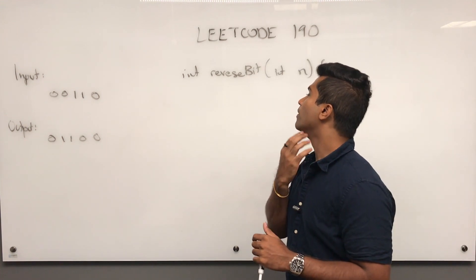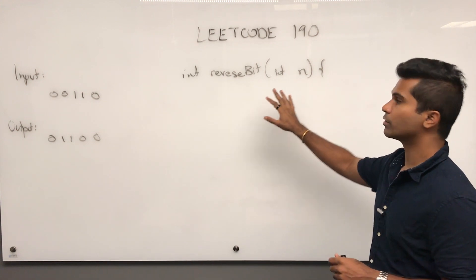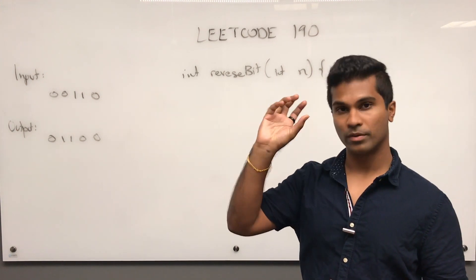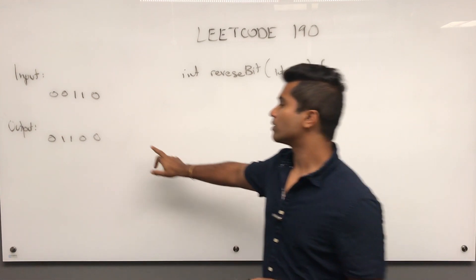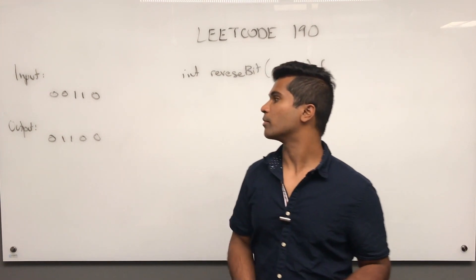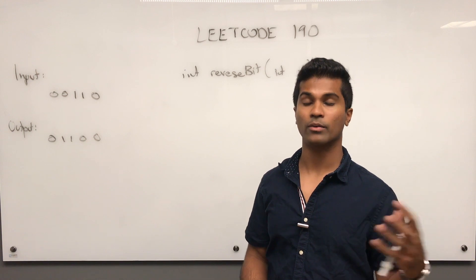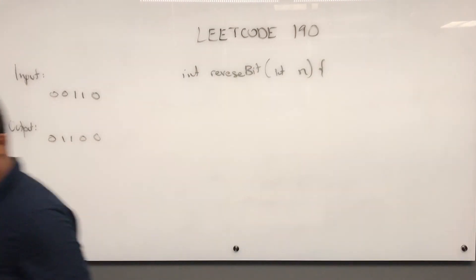The original problem asks: given a 32-bit integer, you swap the bits around and output the result. I'm going to write an example with five bits because I'm actually going to shift them over and show how it's being built up.